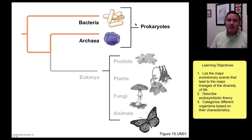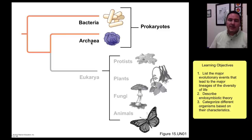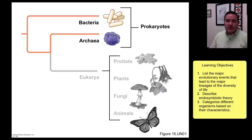The bacteria and archaea are both constructed of prokaryotic cells, and that's why we have prokaryotes in this bracket. But it turns out that archaea are actually more closely related to eukarya than they are to the bacteria. We're going to quickly look at some examples of both bacteria and archaea, and then we'll spend more time looking at the eukaryotes.